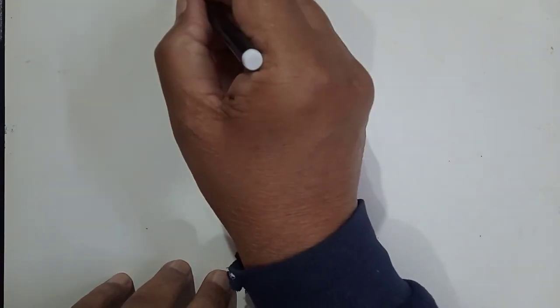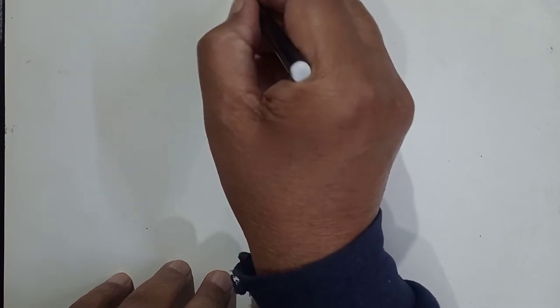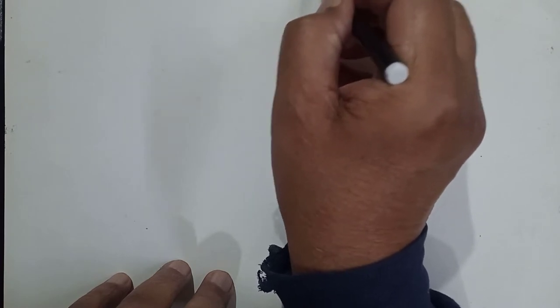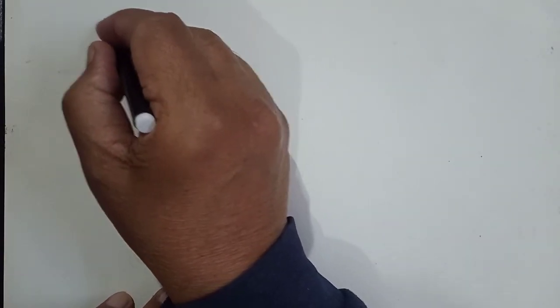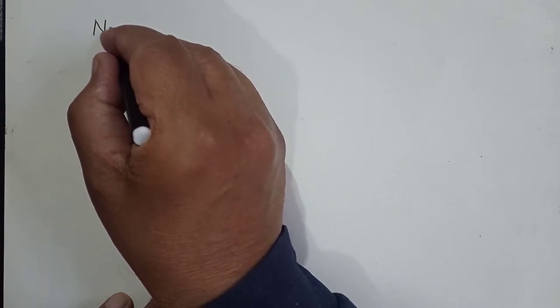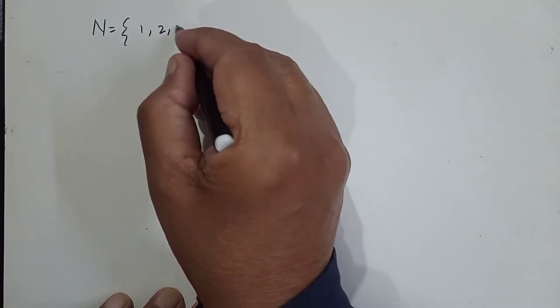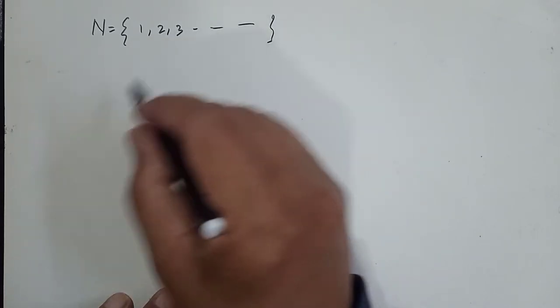Our topic today is the Real Number System. First of all, we define natural numbers. We represent it by N. It is the set of counting numbers 1, 2, 3, dot dot dot, up to infinity. So these are called natural numbers.